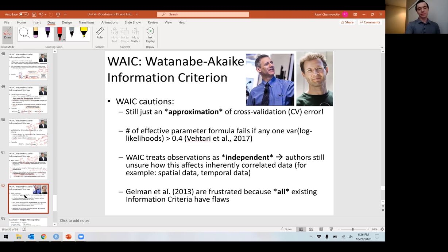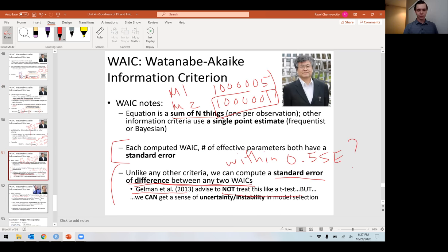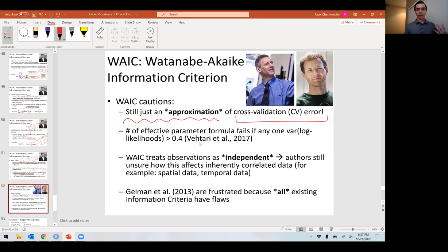WAIC can actually find the standard error of the difference between two information criteria. It is not a silver bullet. It is still just an approximation of cross validation error. It will give you a warning if one of those variances is greater than 0.4, and we'll see that in just a second. That's because it's been shown that the effective number of parameters formula can fail if that's the case. In my experience, it hasn't caused any sort of meaningful difference in interpretation, but I can't speak for every possible analysis out there.